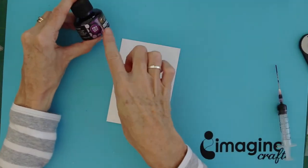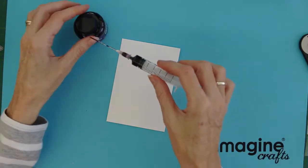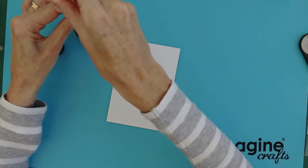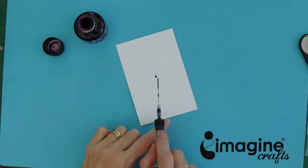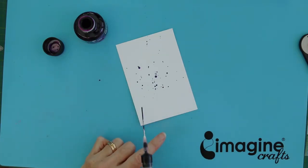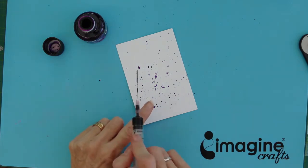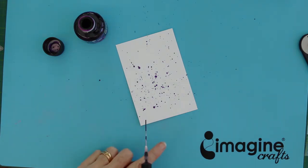To begin I've taken some Purple Grape Reinker and I'm using my syringe to pull up a small amount of the ink. I'm then just going to use the syringe to tap onto my cardstock to create splatters. It's that simple.